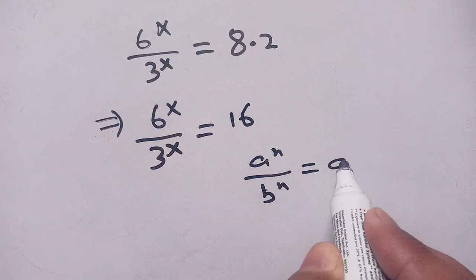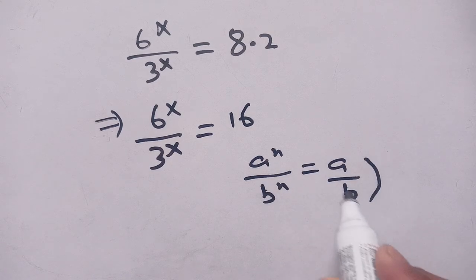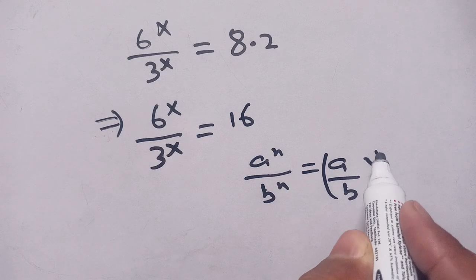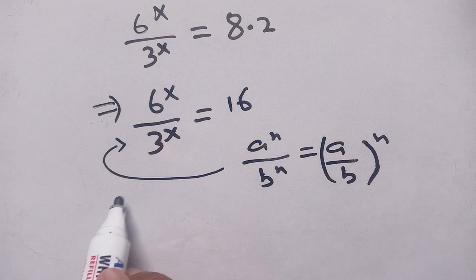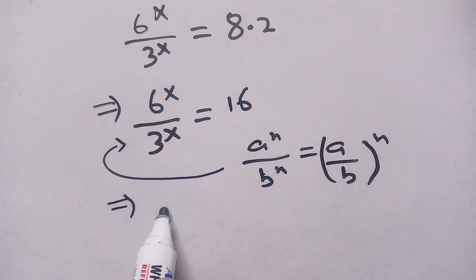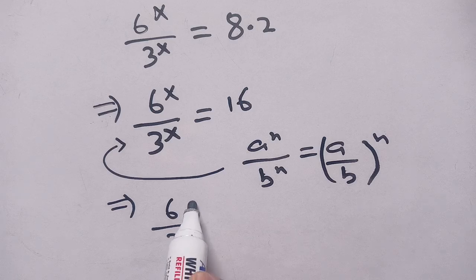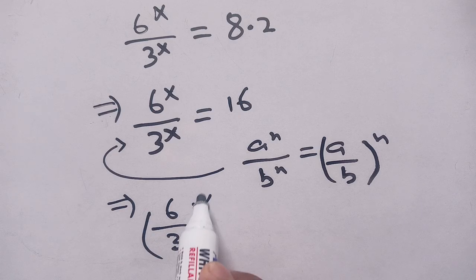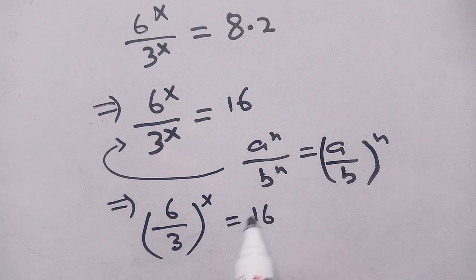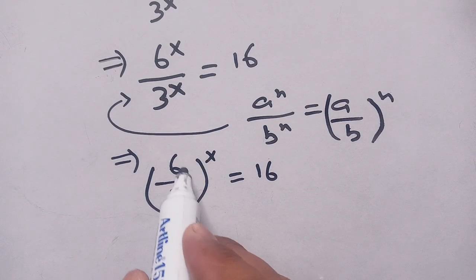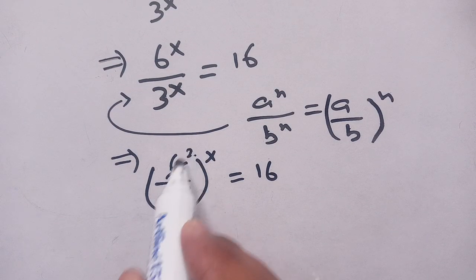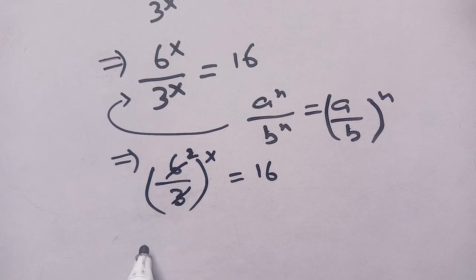We know that a^n divided by b^n equals (a/b)^n. Applying this identity to the left-hand side, we get (6/3)^x = 16. Since 6 divided by 3 equals 2, this becomes 2^x = 16.